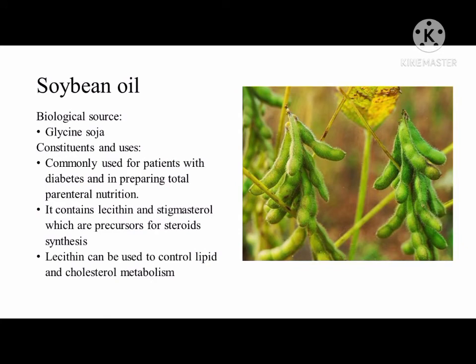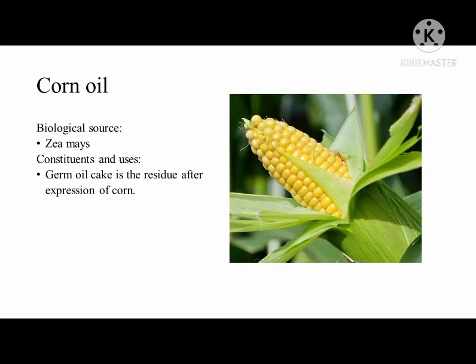Next is soybean oil with biological source Glycine soja. It is commonly used for patients with diabetes and in preparing total parenteral nutrition. It contains lecithin and stigmasterol, which are precursors for steroid synthesis. Lecithin can also be used to control lipid and cholesterol metabolism. Another is corn oil, obtained from Zea mays. One important product is germ oil cake, which is the residue after expression of corn.